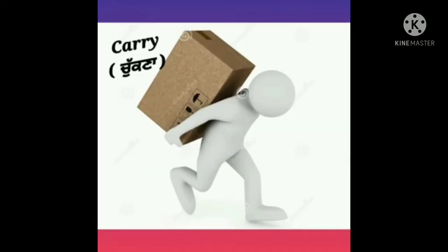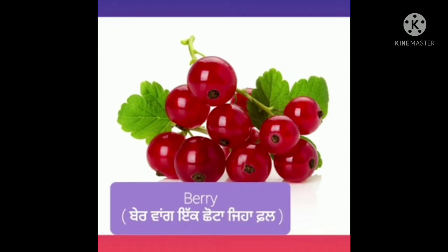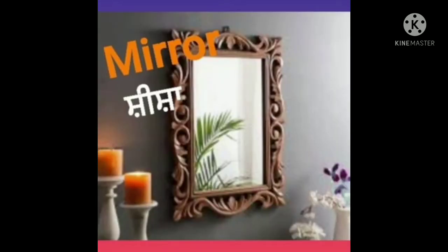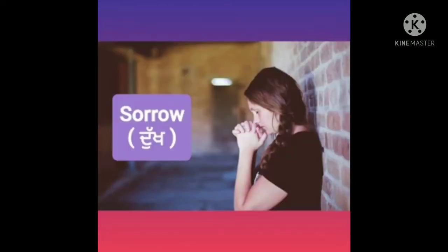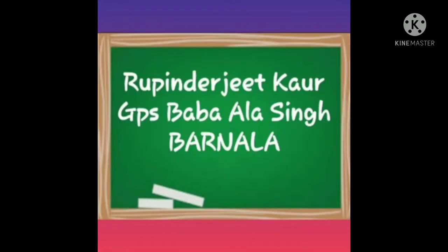Last, words for practice. Our first word is Carry, C-A-R-R-Y, Carry - ਮਤਲਬ ਚੁੱਕਣਾ। Second word is Berry, B-E-R-R-Y, Berry - ਮਤਲਬ ਬੇਰਵਾਂ, ਇੱਕ ਛੋਟਾ ਜਿਹਾ ਫਲ। Third word is Marry, M-A-R-R-Y, Marry - ਮਤਲਬ ਵਿਆਹ ਕਰਨਾ। Fourth word is Mirror, M-I-R-R-O-R, Mirror - ਮਤਲਬ ਸ਼ੀਸ਼ਾ। Fifth and last word is Sorrow, S-O-R-R-O-W, Sorrow - ਮਤਲਬ ਦੁੱਖ। ਅੱਜ ਲਈ ਸਾਡੀ ਸਲਾਈਡ ਕੰਪਲੀਟ ਹੋਈ।